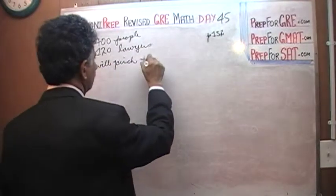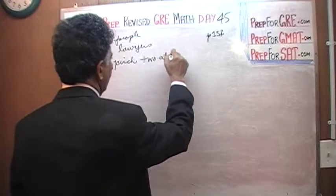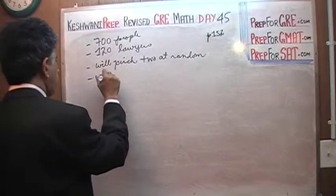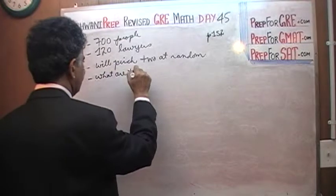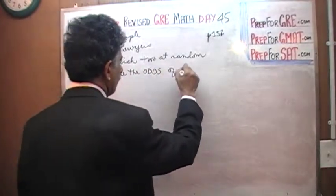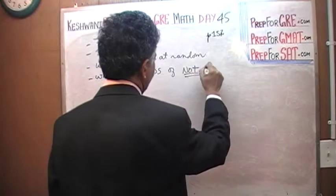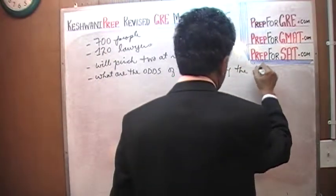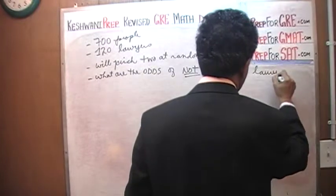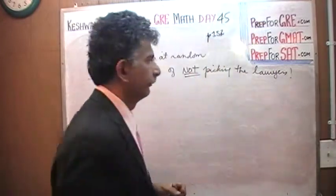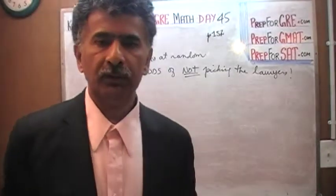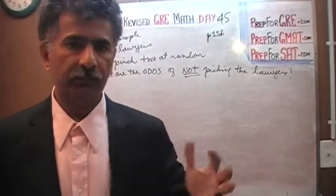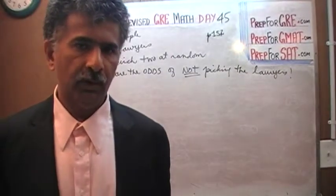We'll pick two at random. The question is: what are the odds of not picking the lawyers, not picking one of the 120 lawyers? Again, we have a group of 700 people, of which 120 are lawyers. We're going to put all their names in a hat.